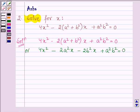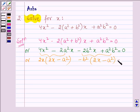Now, we shall take the common factors from the first two terms and the last two terms. Taking 2x common from the first two terms, we have 2x(2x - a²). Taking -b² common from the last two terms, we have -b²(2x - a²).